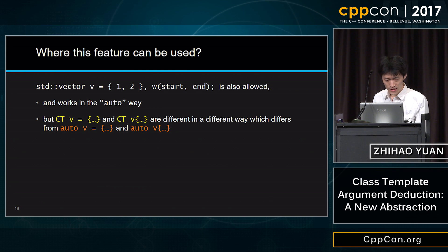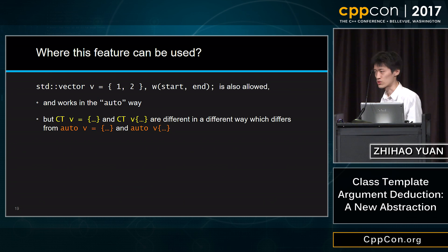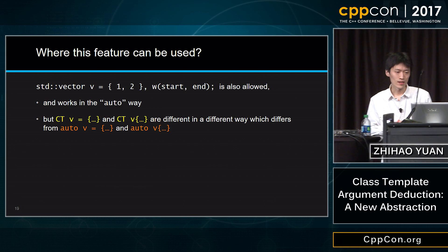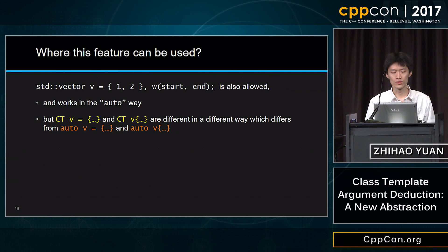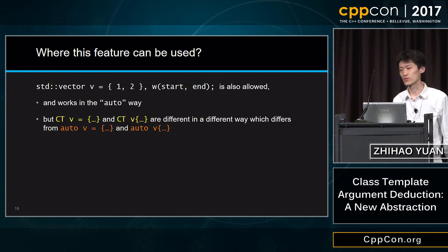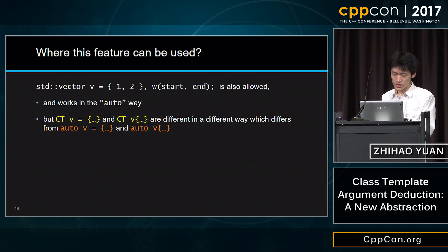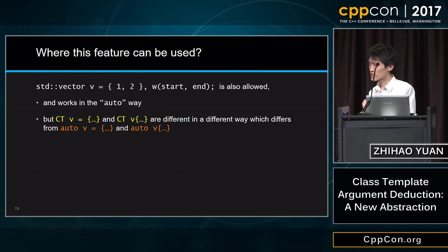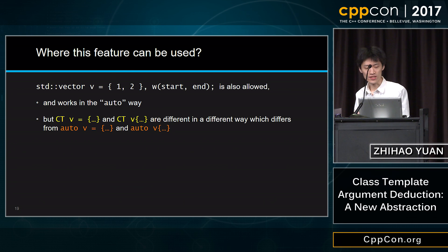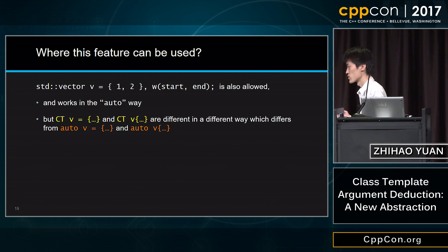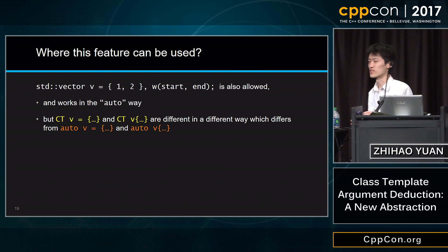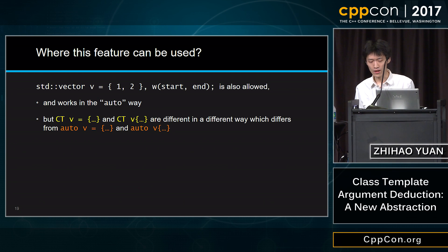Similarly to auto, class template argument deduction also allows declaring more than one variable at the same time, with the same requirement: both variables must be exactly the same type. But then uniform initialization kicks in and there is some difference — difference on top of difference. I'll explain how detailed the differences are. I apologize that I have to introduce something not yet in the standard to explain the rationale, but trust me it's the most intuitive and clear way to remember this difference.